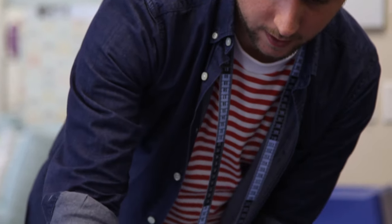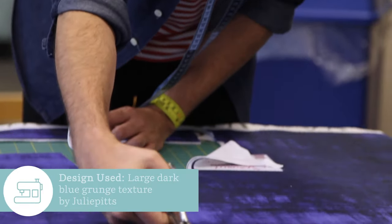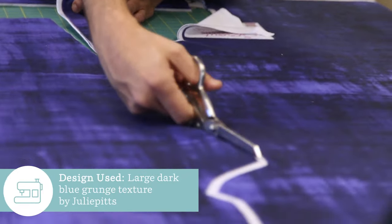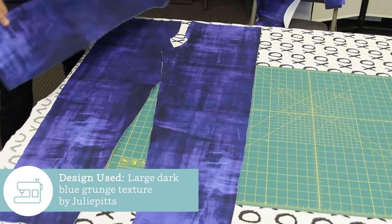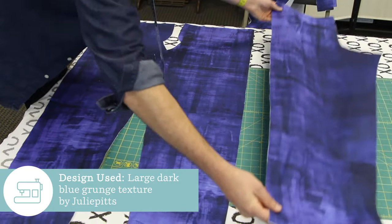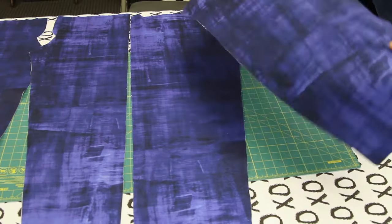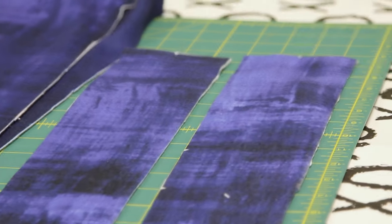Start by cutting out your pattern pieces. Your Jasper Pattern includes two front pant legs, two back pant legs, two waistband pieces, and a fly facing.